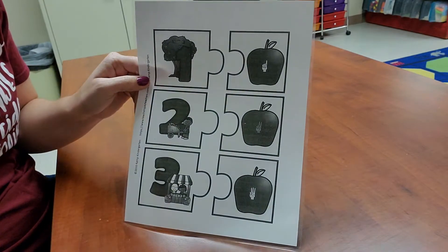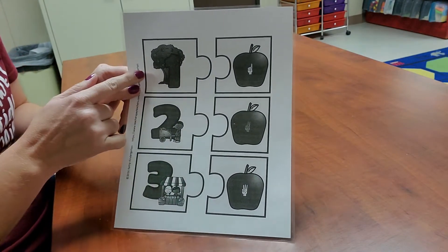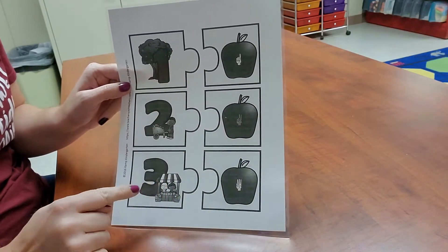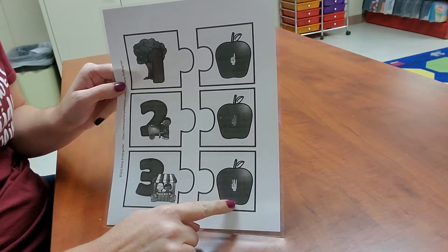So we have a number puzzle. We have the number one with one finger. We have the number two with two fingers. We have the number three with three fingers.